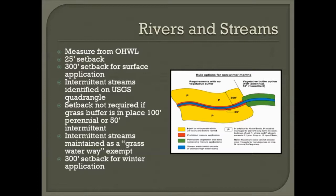If you're surface applying, there's a 300-foot setback measured back from the ordinary high water level. Intermittent streams — those that only flow during rainfalls or runoff events — also have setbacks. They can be identified on your USGS quadrangle maps, which can be requested from your local SWCD office or MPCA offices. Those are the same setbacks as rivers and streams.